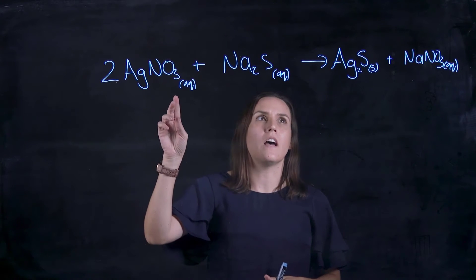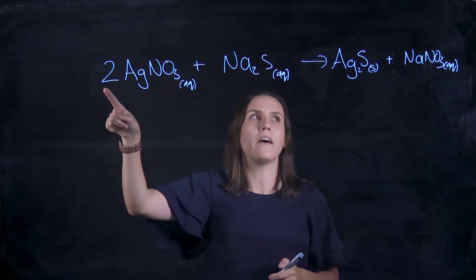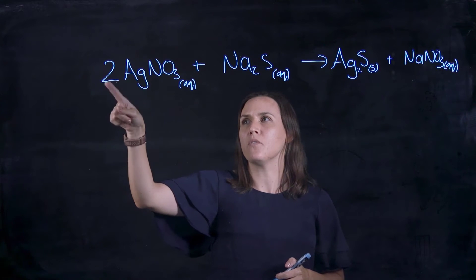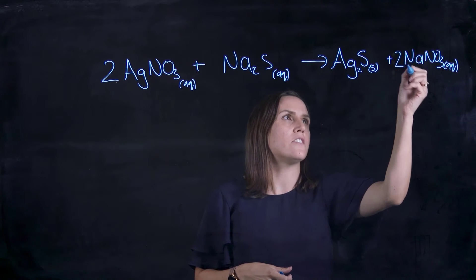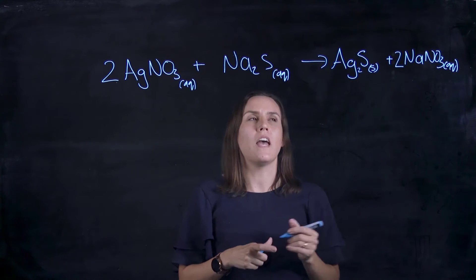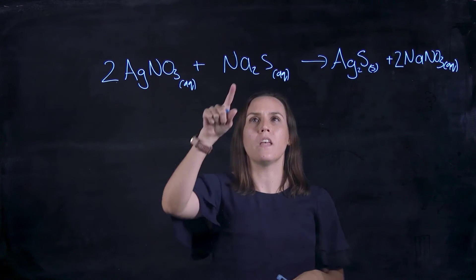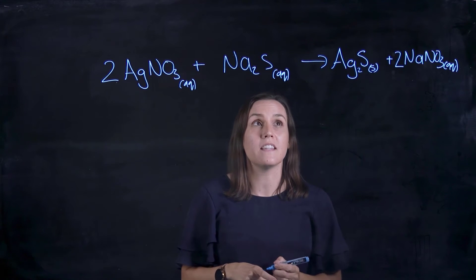We've got two silver here so I've put a two out the front here, and that means we've got two nitrates as well, so I'm going to need two nitrates on this side. Then I've got two sodium and two sodium here, so now this is balanced.